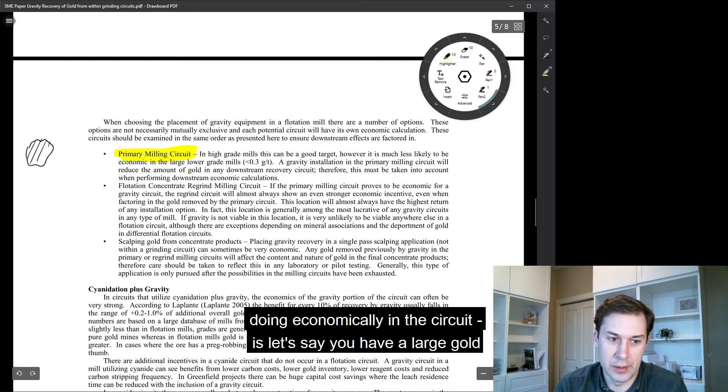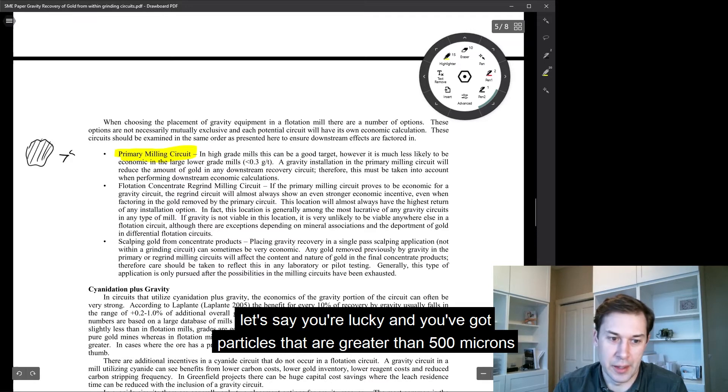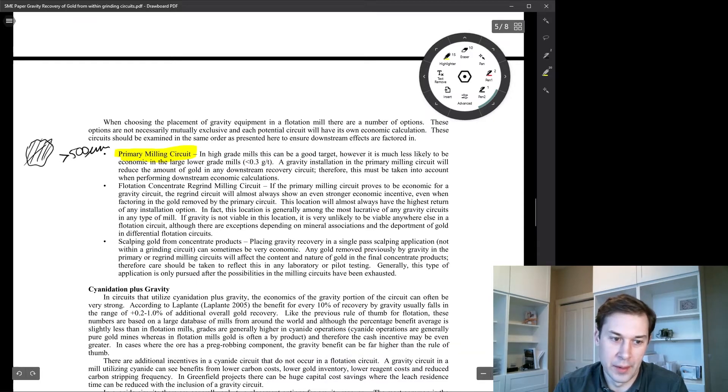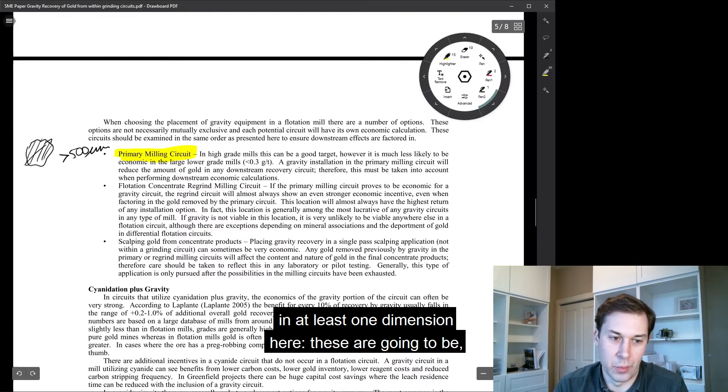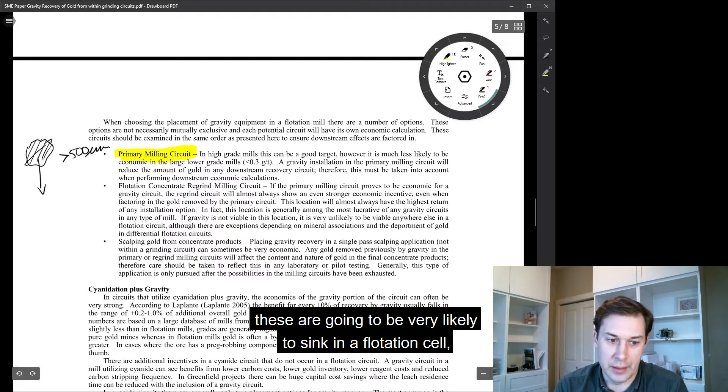is let's say you have a large gold particle, and just for example, let's say you're lucky and you've got particles that are greater than 500 microns in at least one dimension. These are going to be, because of the high density, high specific gravity of gold, very likely to sink in a flotation cell.